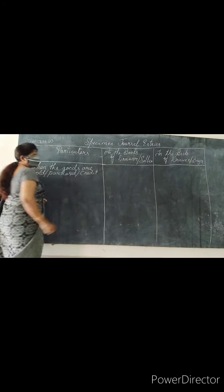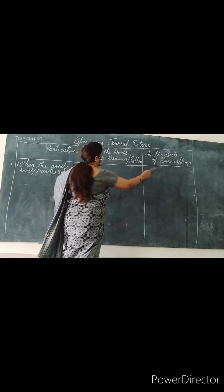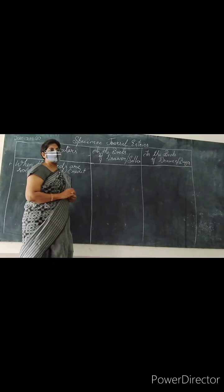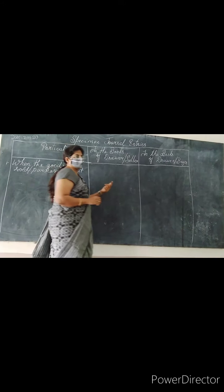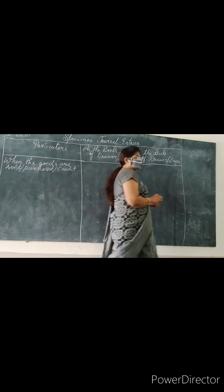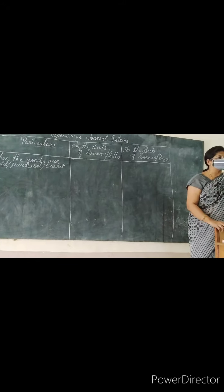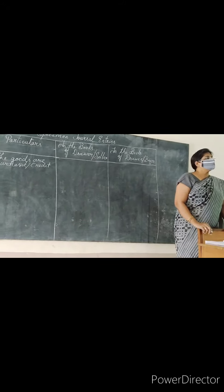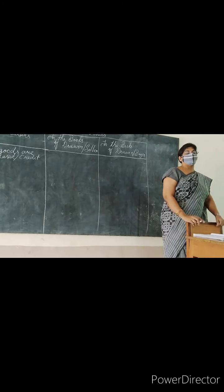We will see purchase here. The buyer is purchasing from the seller. What is the buyer supposed to give to the seller? Cash. But will we get cash here? No, because it is a credit transaction. So who is still holding the cash? It is the buyer.